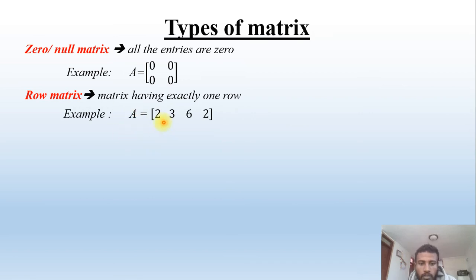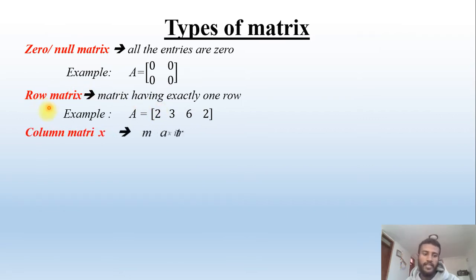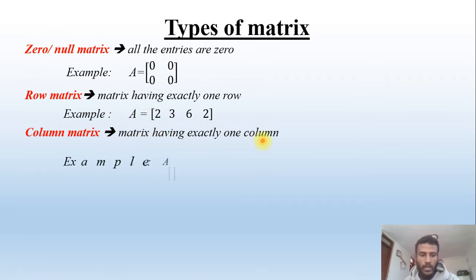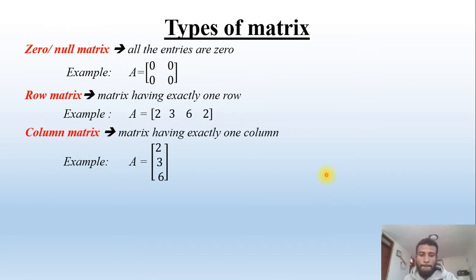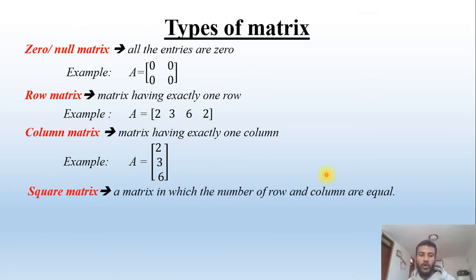The next type is a row matrix, which is a matrix having exactly one row. For example, A = [2, 3, 6, 2] has one row, so it is called a row matrix. Another type is the column matrix, which is a matrix having exactly one column.